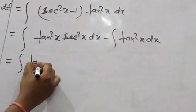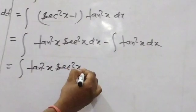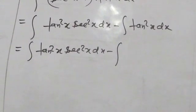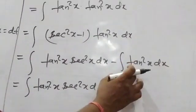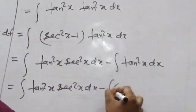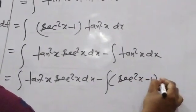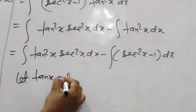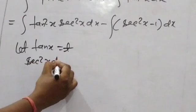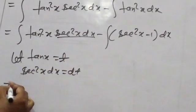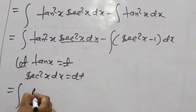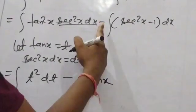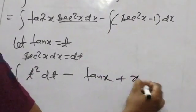For the first part, let T = tan x, so sec²x dx = dT, giving ∫T² dT. For the second part, tan²x = sec²x - 1, so ∫tan²x dx = ∫(sec²x - 1) dx = tan x - x + C.